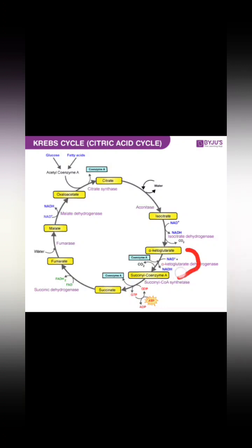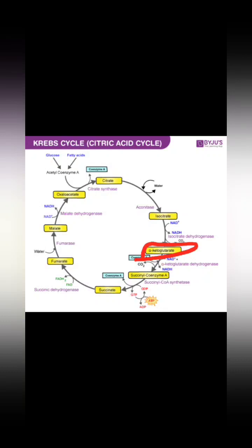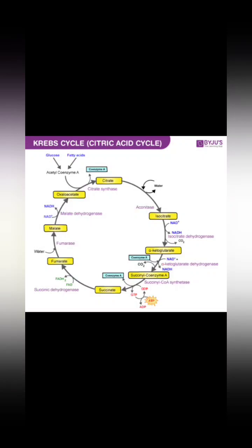The next step is alpha-ketoglutarate converting into succinyl-CoA. The enzyme used is alpha-ketoglutarate dehydrogenase. This step is similar to the previous one — alpha-ketoglutarate undergoes decarboxylation, so carbon dioxide is released here as well, and NADH is produced.